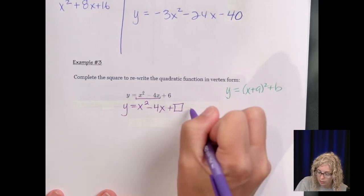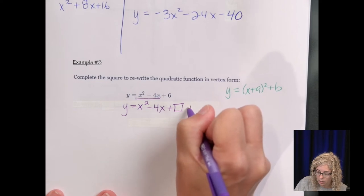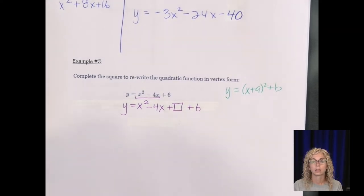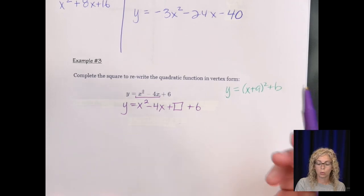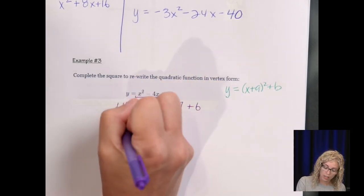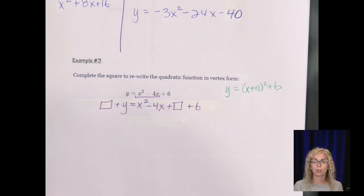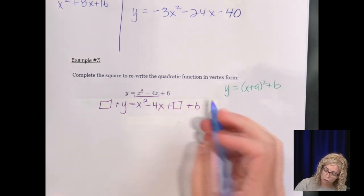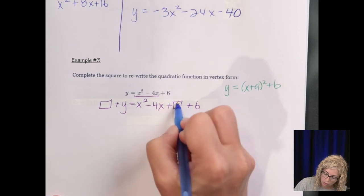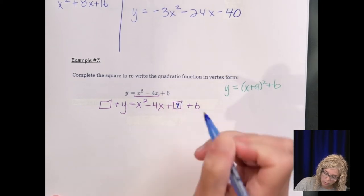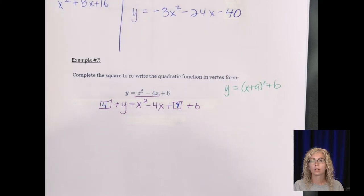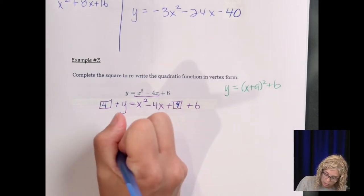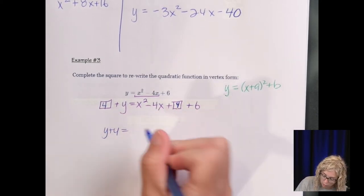However, since it's not equal to 0, we're just going to add the box in right after the X. And then keep the plus 6. Remember, though, an equation, whenever you add to one side, you have to add to the other. So I am going to add the box on both sides. So half of 4 is 2, and then 2 squared is 4.